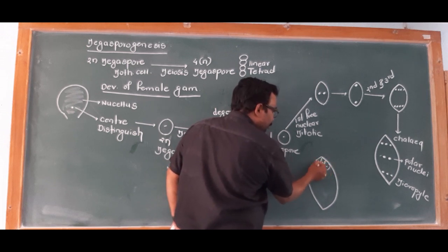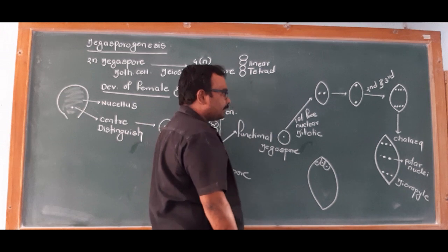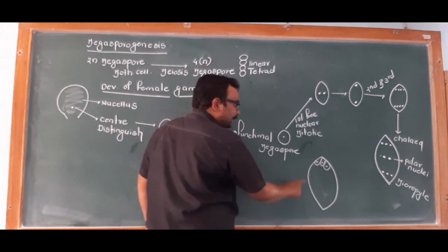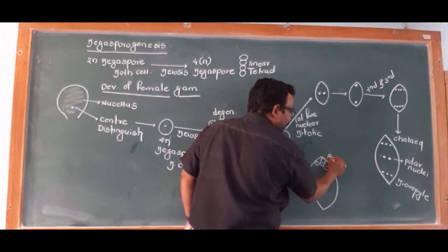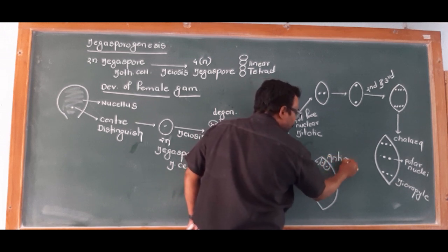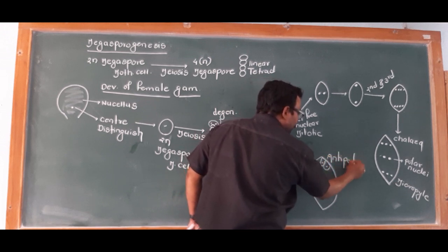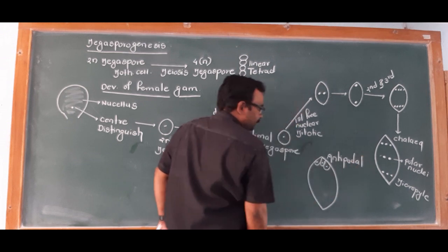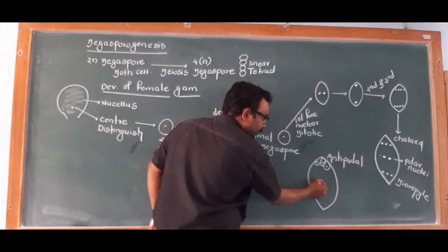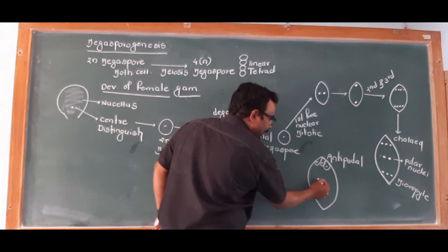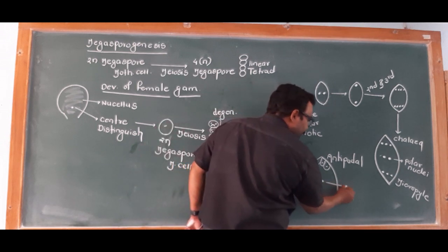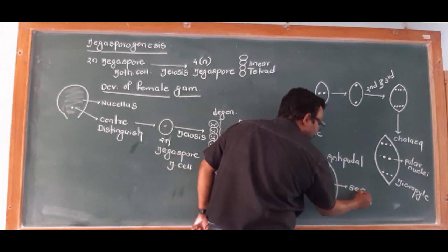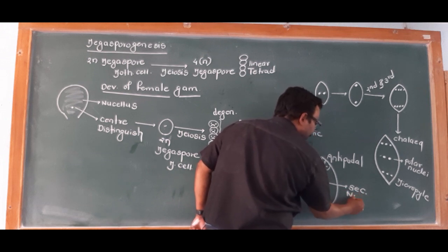There are three haploid cells at one pole. The other cells at the opposite pole are the antipodal cells. The two polar nuclei in the center are fused to form the secondary nucleus.